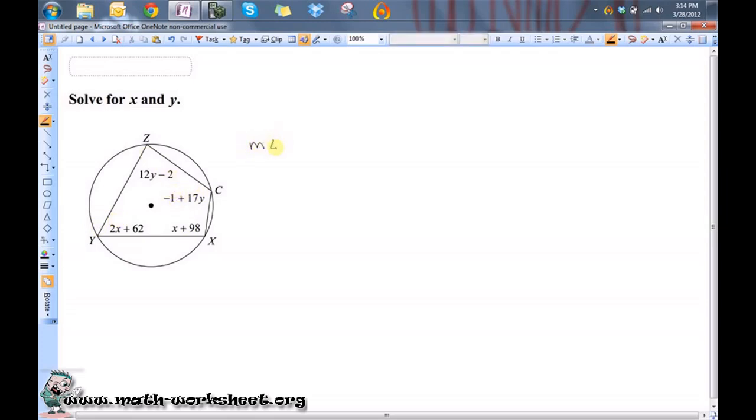So that means the measure of angle Z plus the measure of angle X equals 180 degrees, and the measure of angle Y plus the measure of angle C equals 180 degrees.